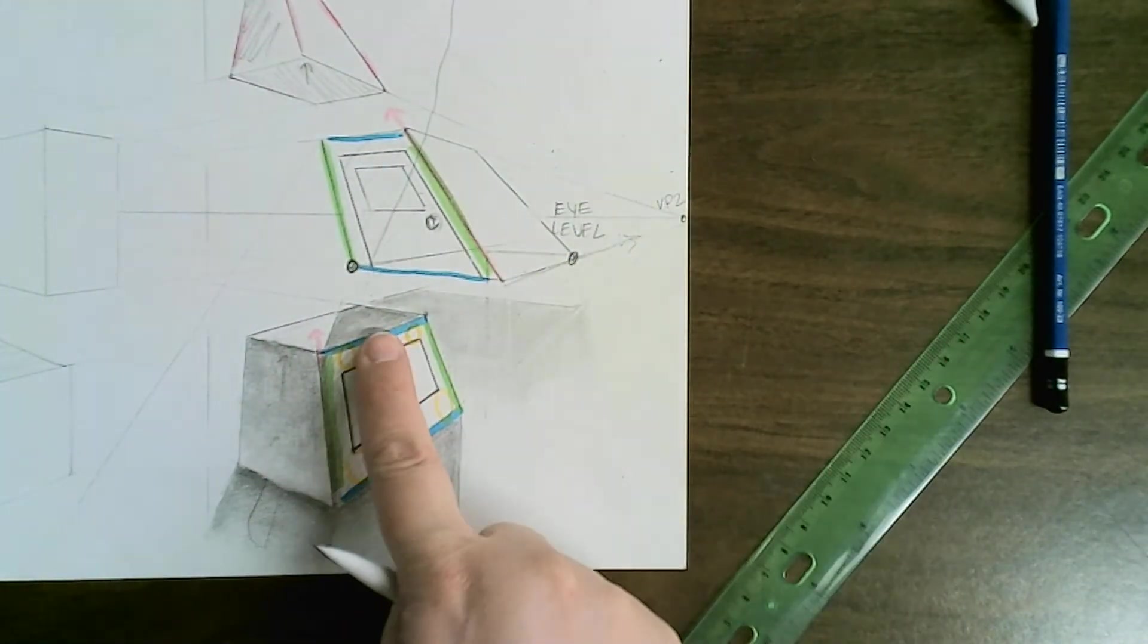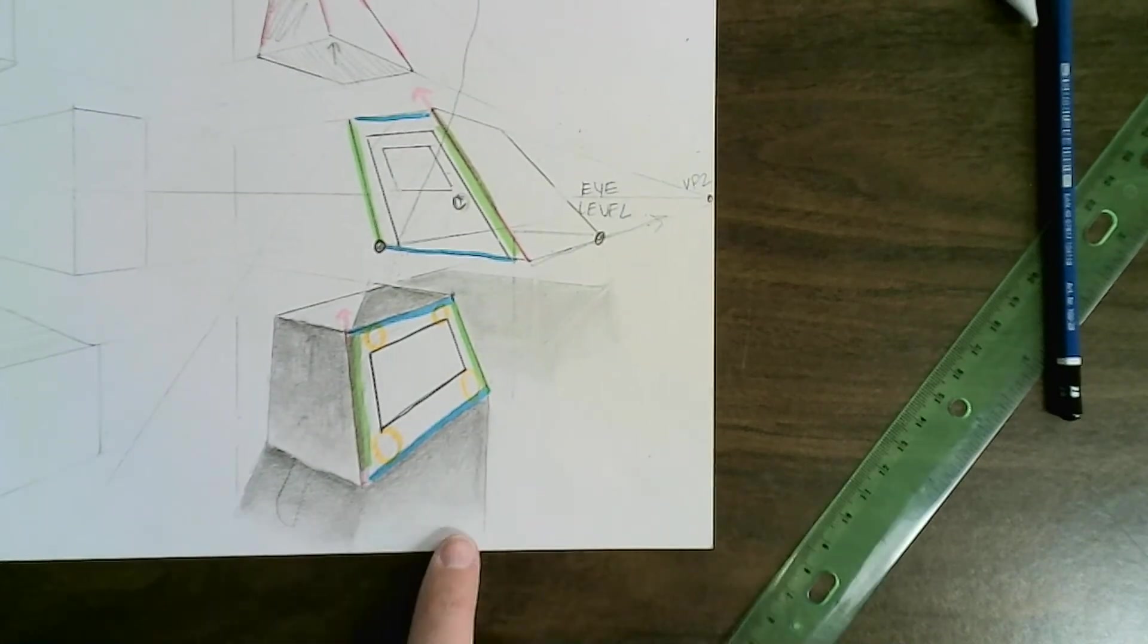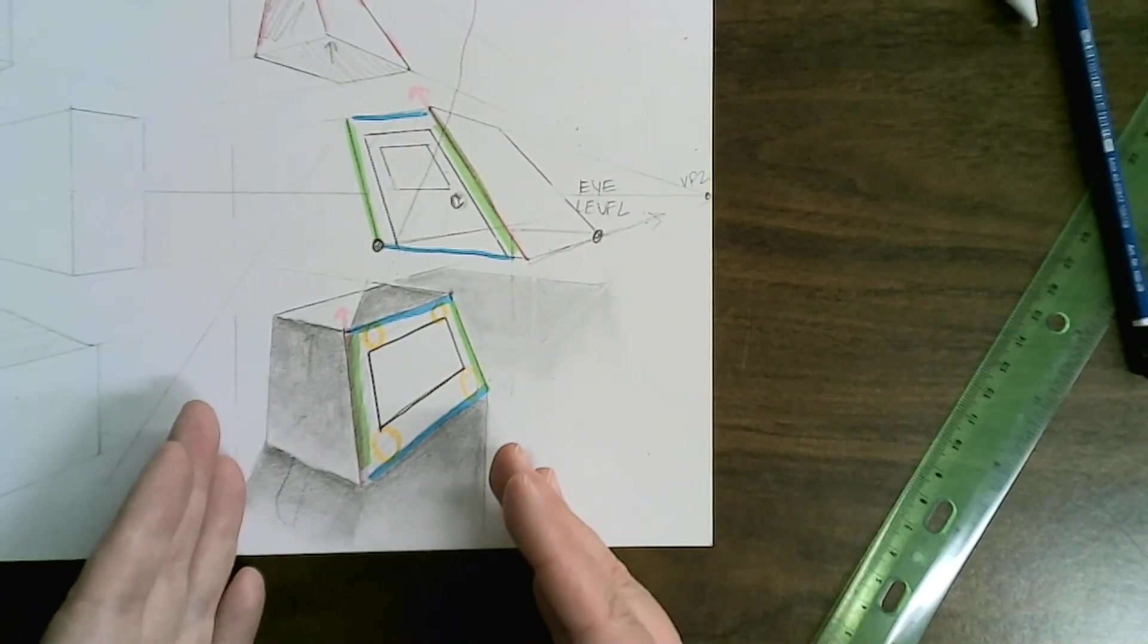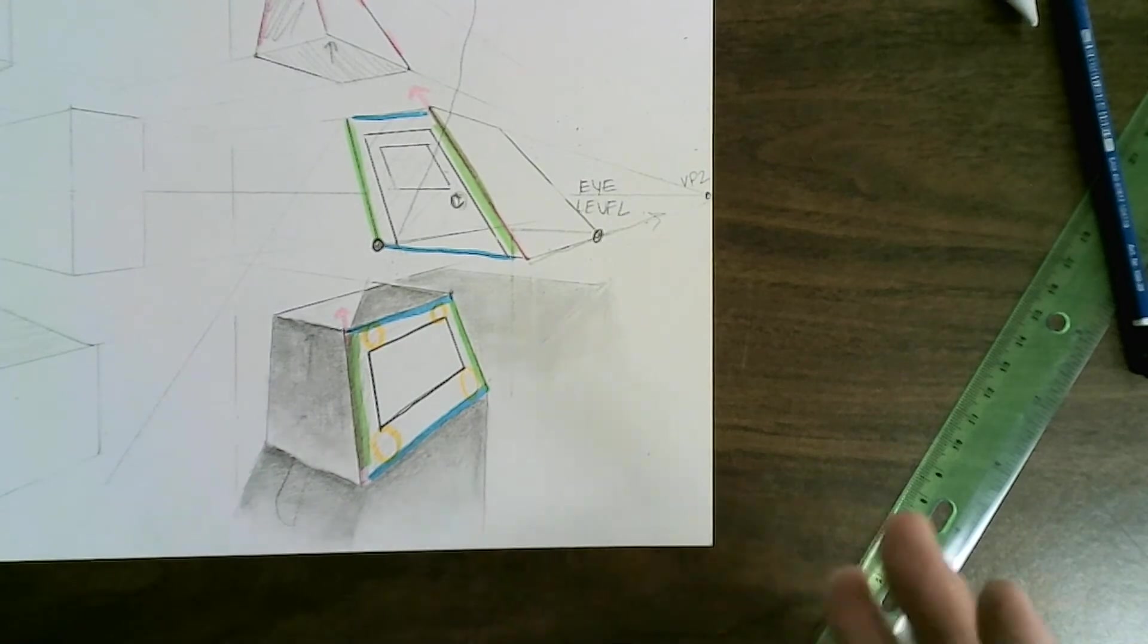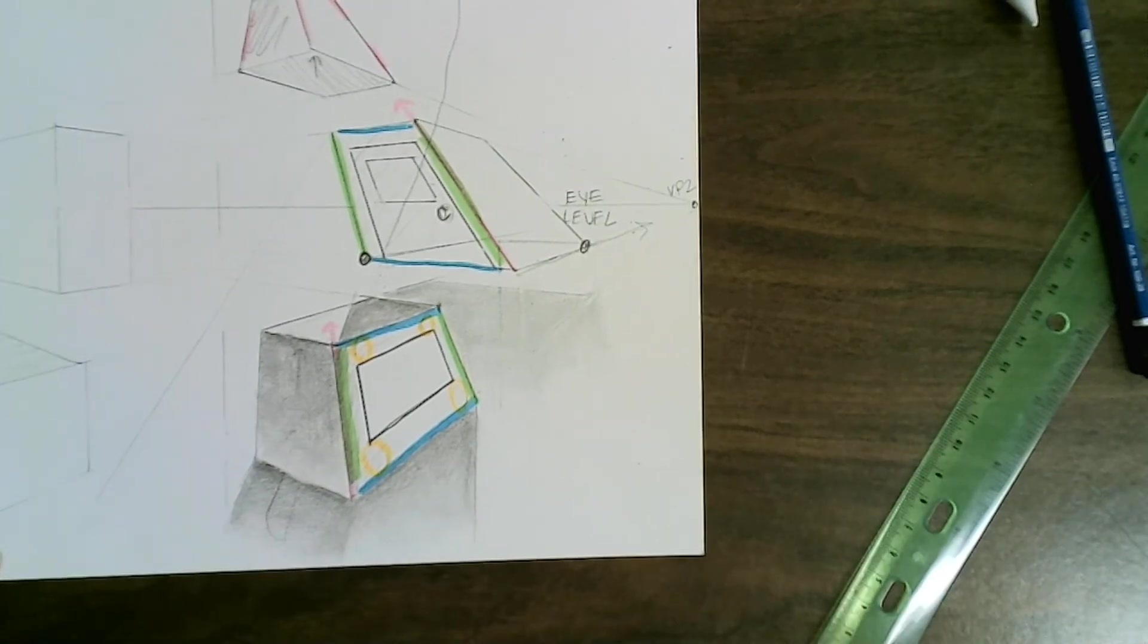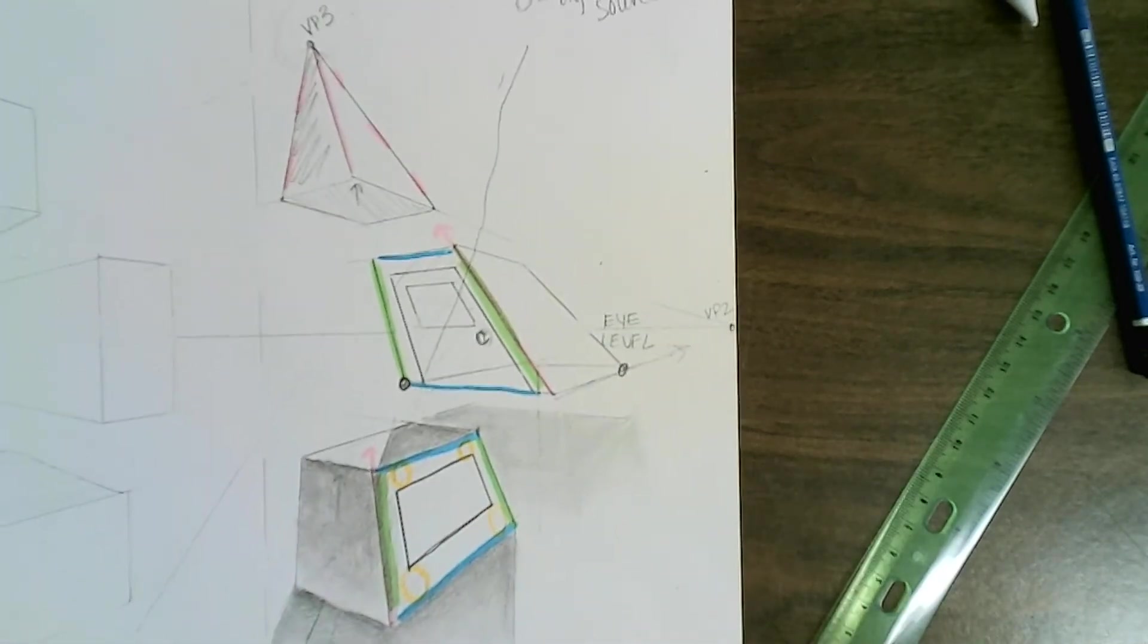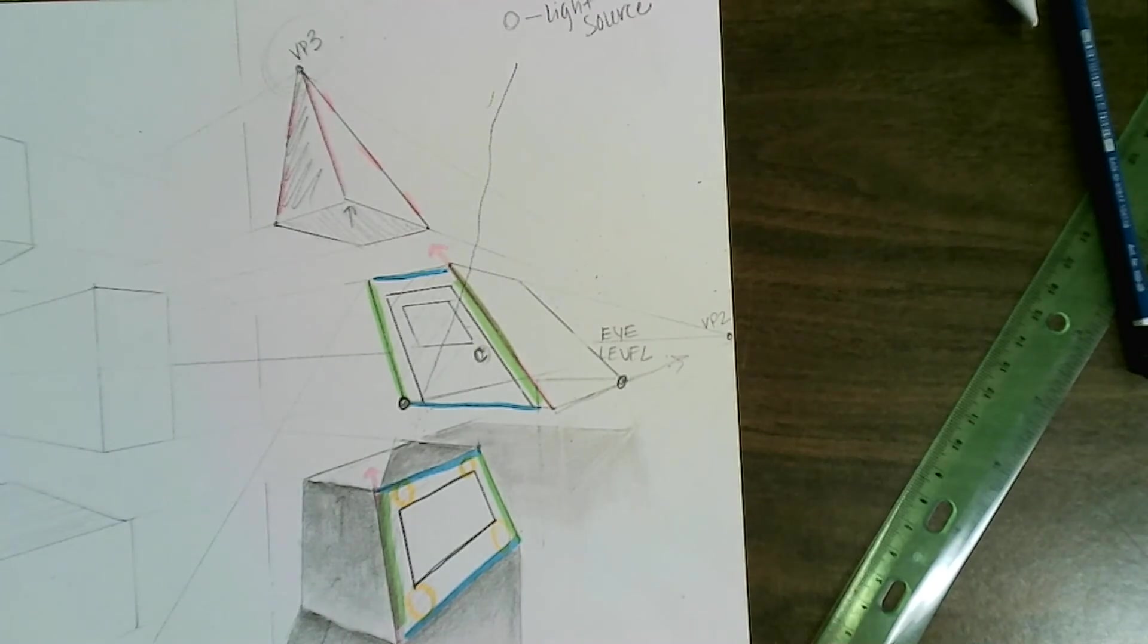So therefore it looks like this is casting a shadow. It's casting a shadow on this one. It's blocking it. And then you have your cast shadow. Also anything that's closer to you would have a darker shadow because it's more detail. So there is your light source in three point perspective.